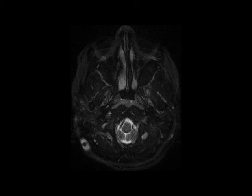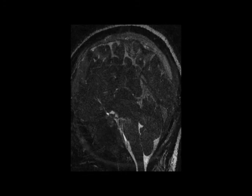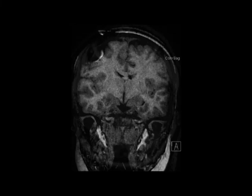The sagittal CISS sequence demonstrates sagging of the brainstem and fullness of the pituitary gland. Inferior descent of the supratentorial structures is confirmed on the coronal T1-weighted sequence, where there is mild downward transtentorial herniation of the uncus bilaterally. The post-contrast sagittal T1-weighted sequence re-demonstrates brainstem sagging, cerebellar tonsillar crowding, and increased pachymeningeal enhancement and thickening.